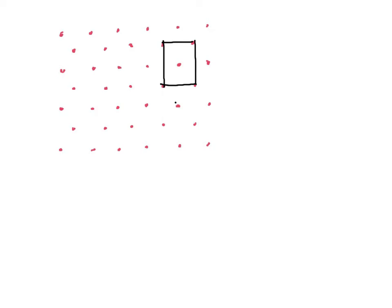Now we are going to use this lattice to define some important concepts. One way to define a lattice mathematically is by using these things called unit cells. Let me give an example of a unit cell — I am just going to draw one possible unit cell that can define this lattice. The interesting thing about unit cells is that when they are translated periodically, they can actually replicate the entire lattice. In other words, you can tile this two-dimensional plane with this rectangular unit cell and recreate the entire two-dimensional lattice.